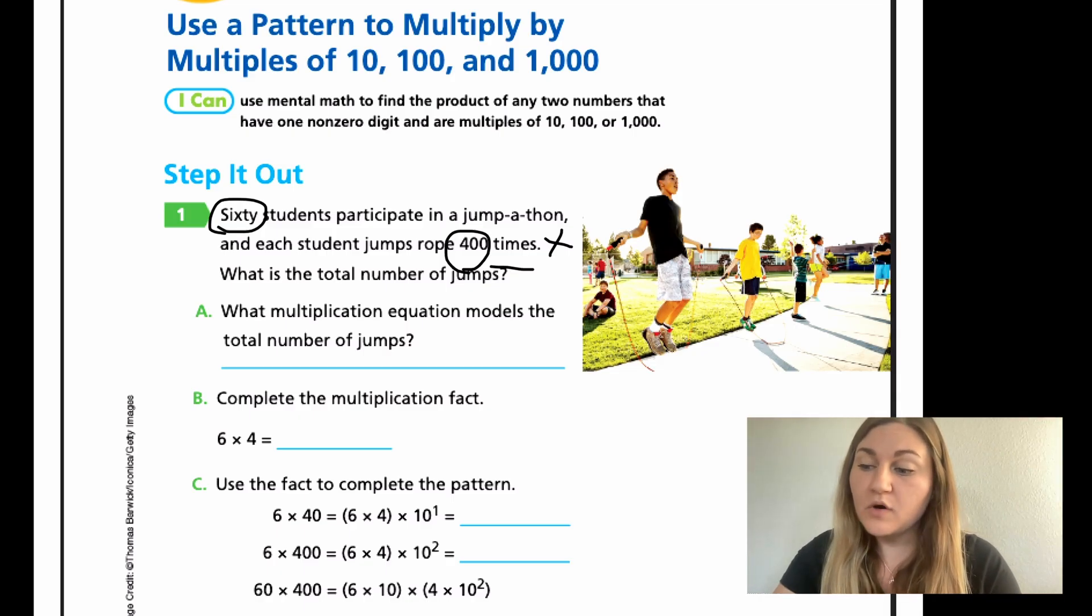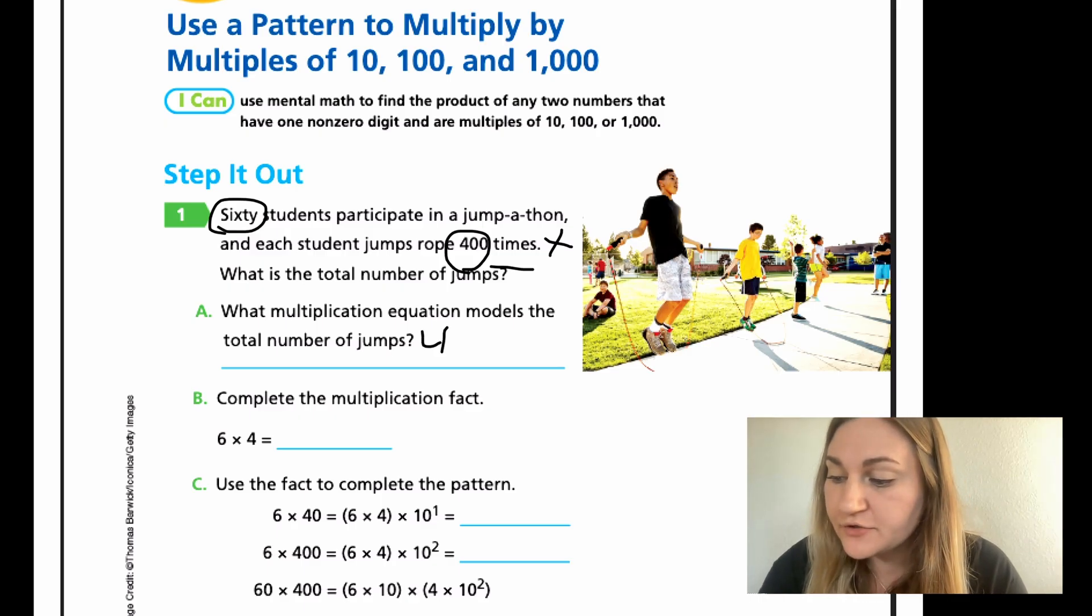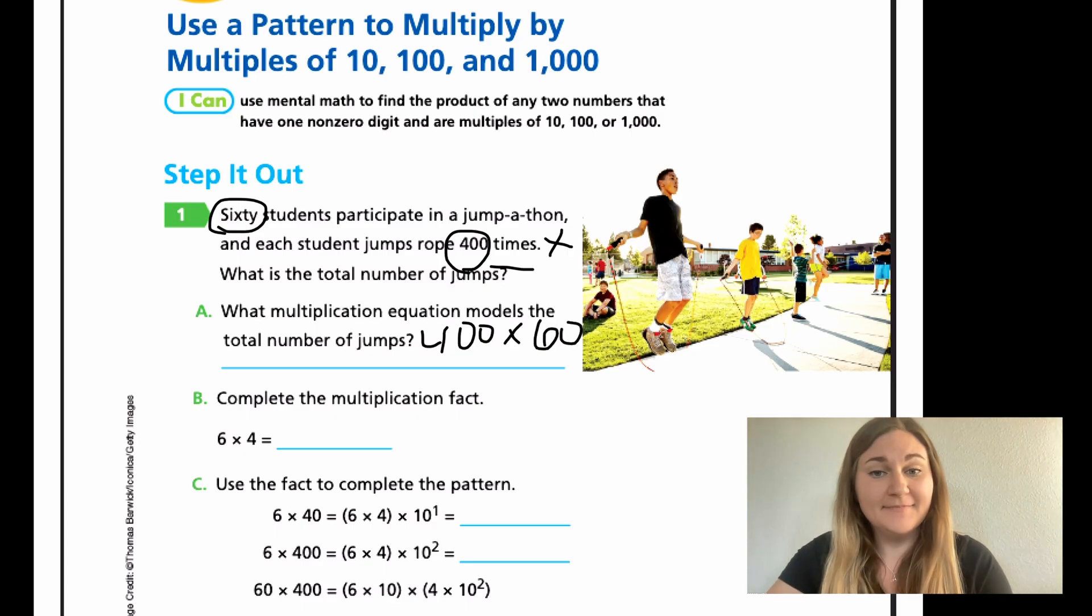Part A, what multiplication equation models the total number of jumps? This is pretty easy because we already did the work. An example model would be 400 times 60.